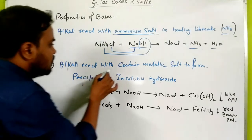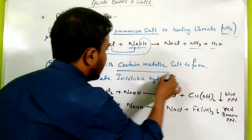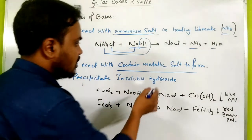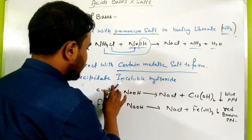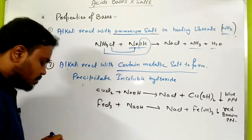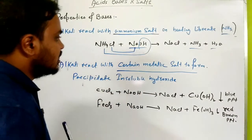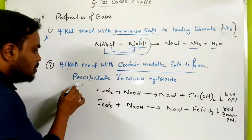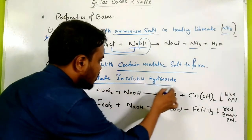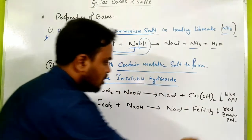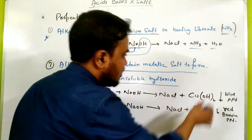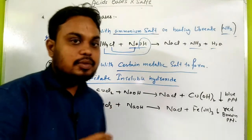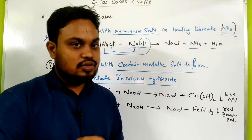The second reaction: alkali reacts with certain metallic salts. We will see the full detail in the next class. When alkali reacts with certain metallic salts, it forms a precipitated insoluble hydroxide. The color of the precipitate changes for different metals, which is also useful as an indicator.